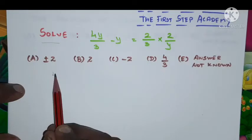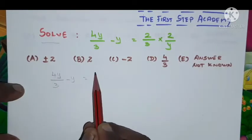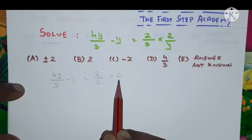Let me write the given problem: 4y divided by 3 minus y which is equal to 2 by 3 into 2 by y.